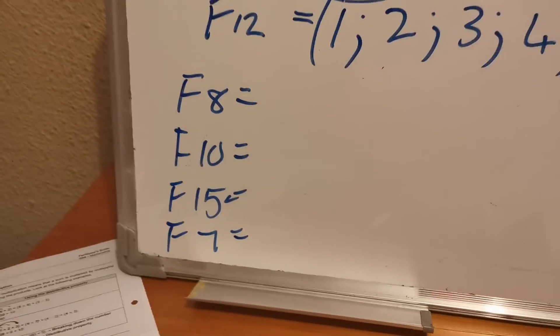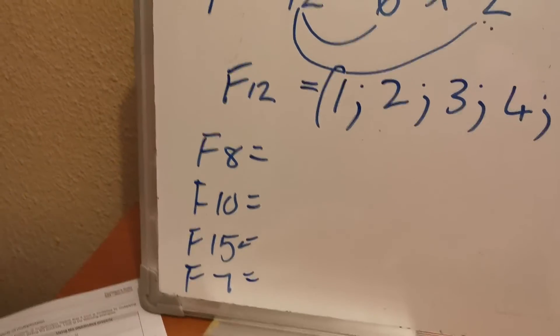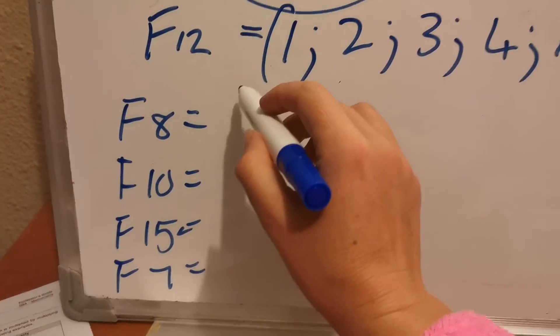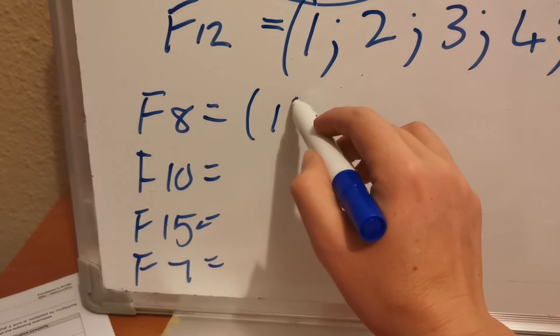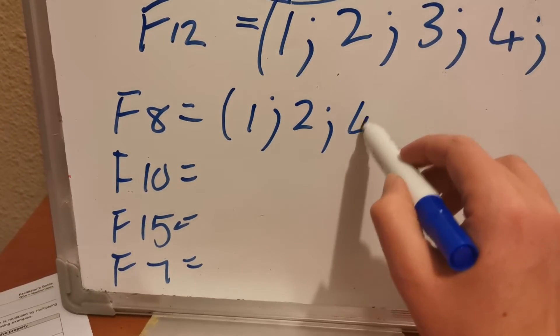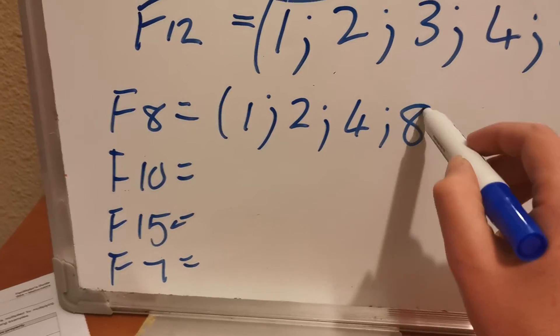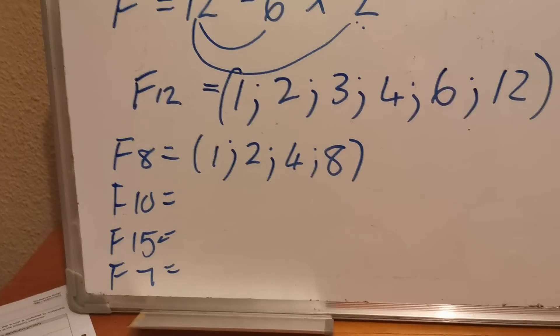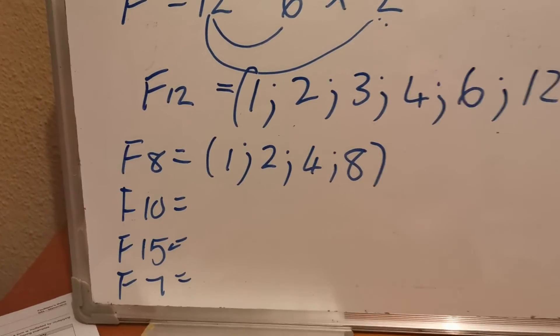So if you look at number 8, what numbers can be divided into 8 without a remainder? 1, 2, 4, and 8. Because if you divide 8 with any of those 4 numbers you will not get a remainder.